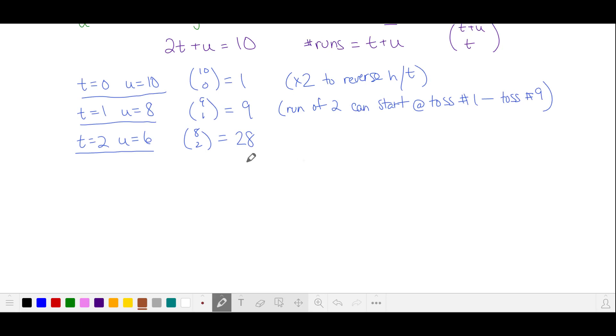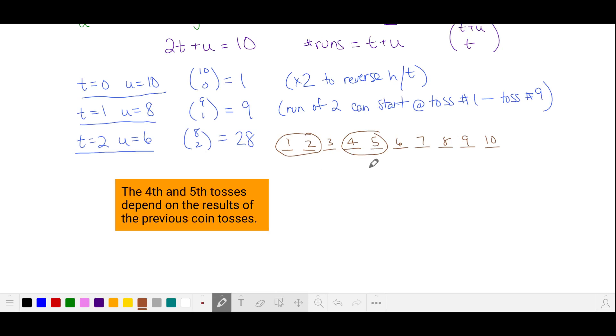Let's take a look at an example of what this case might look like. These represent our 9 coin tosses. I've circled our 2 runs of 2. So the first 2 tosses are either both heads or both tails and the 4th and 5th tosses are either both heads or both tails. For example, we fill in the heads and tails according to the length of the run.